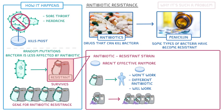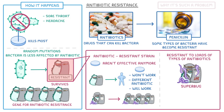And as you can imagine, this could happen again and again until it's resistant to loads of different antibiotics. We call these bacteria that are resistant to loads of different types of antibiotics superbugs. An example of a superbug is MRSA. Because its resistance makes it so hard to kill, it's actually relatively common and often infects people in hospital where it can be fatal.